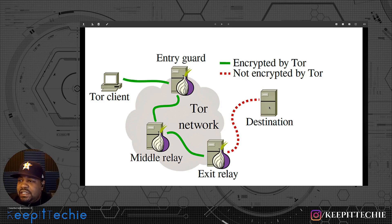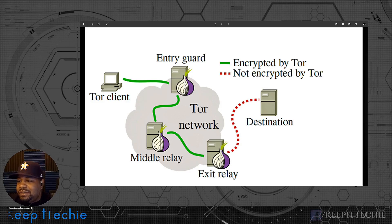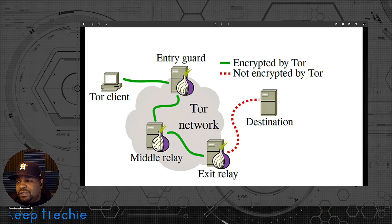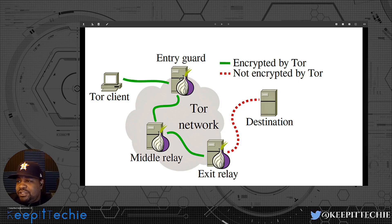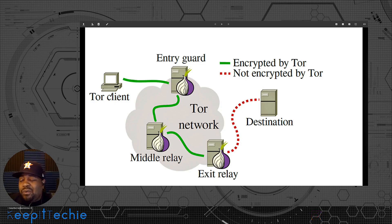It could be a request to go to Instagram or Facebook — whatever the request is, the exit node sends it to that server. The server sends the information back, and then the process reverses. The data comes back to the exit node, which encrypts it at that level, passes it to the middle node which encrypts it again on top, and the entry node encrypts it once more and sends it back to you. Your browser holds all the keys, so it strips off each layer of encryption.